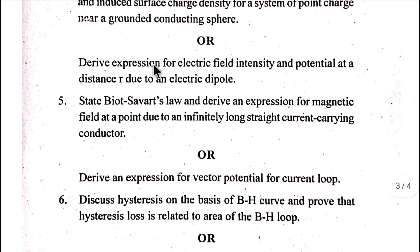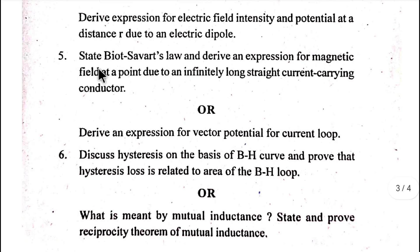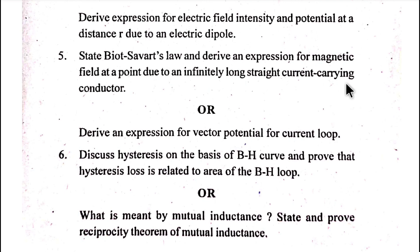Derive an expression for electric field intensity and potential at a distance r due to an electric dipole. Number five: State Biot-Savart law and derive an expression for magnetic field at a point due to an infinitely long straight current carrying conductor.